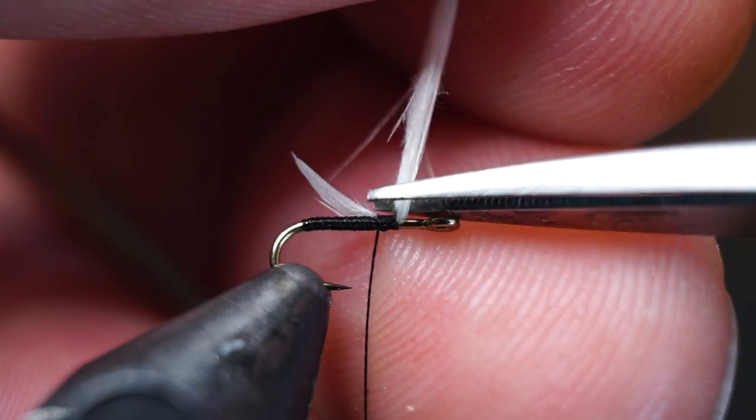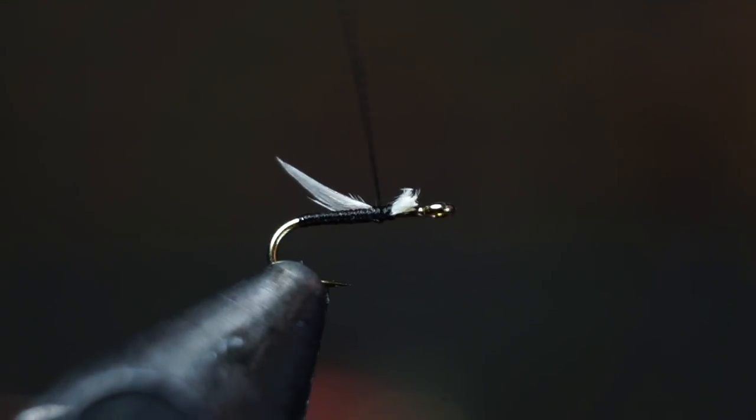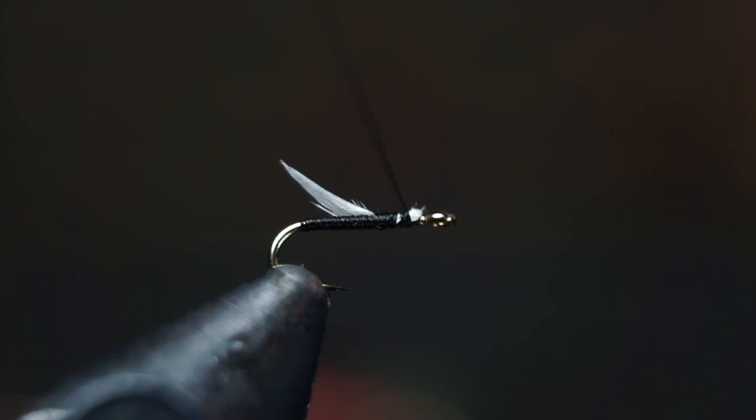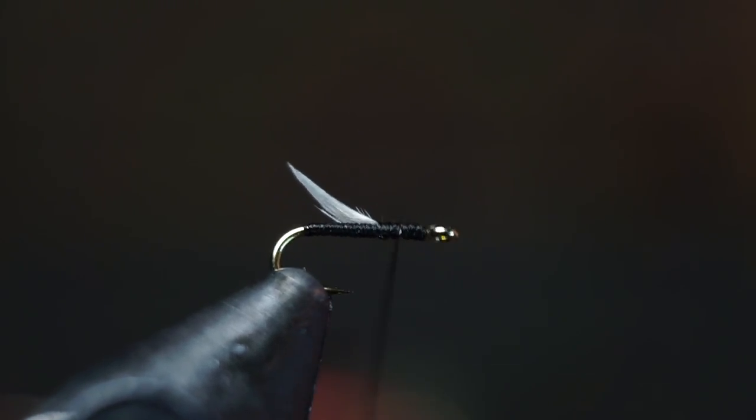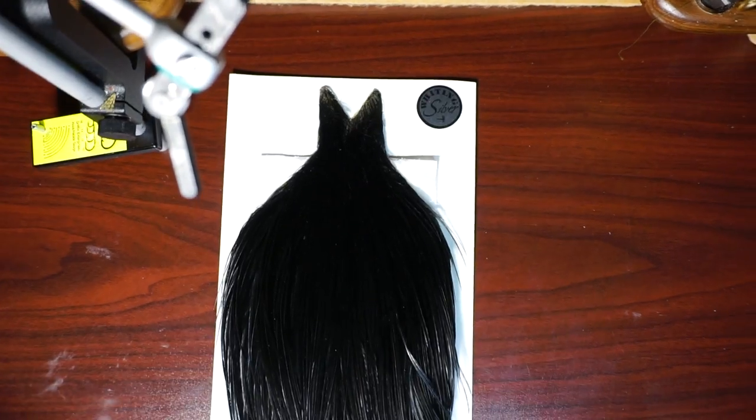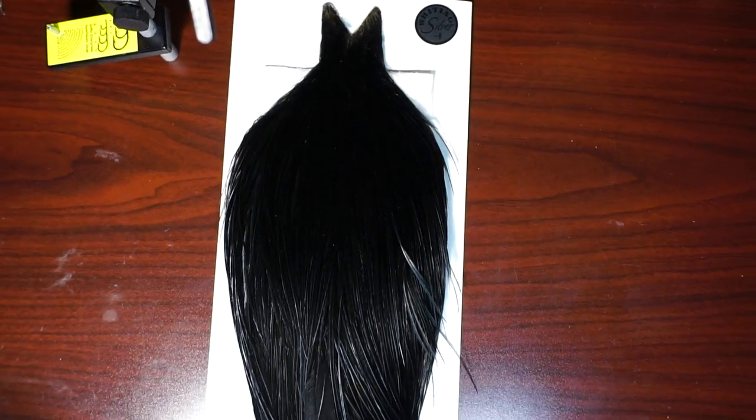Then clip off the waste close and clean up that section with smooth wraps, but bring your thread back up to the starting point of your wing. You will need a rooster cape like this one.